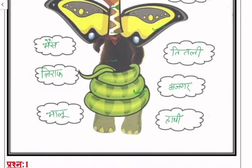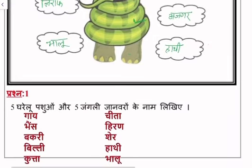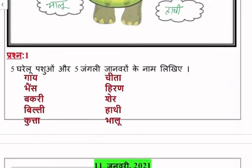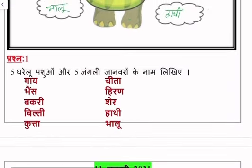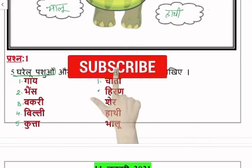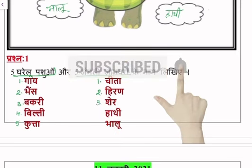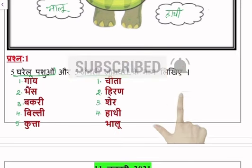Five jungle animals' names are: Chita, Hiran, Shier, Hathi, Balu.